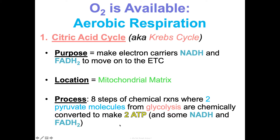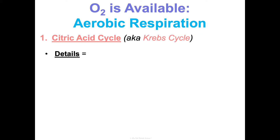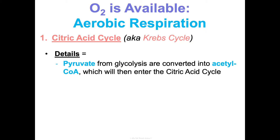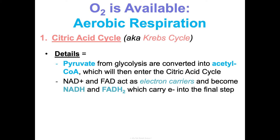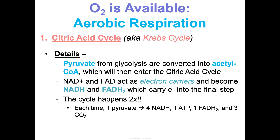You don't need to worry about the exact count of those electron carriers. CO2 is produced as a product. The pyruvates from glycolysis get converted into acetyl-CoA, and that is what enters this cycle. NAD+ and FAD act as electron carriers, and they become NADH and FADH2 when they pick up those electrons and hydrogens and carry them into the final step. This cycle happens two times — just like the Calvin cycle happens twice in photosynthesis. Each time it takes one pyruvate and makes four NADH, one ATP, one FADH2, and three CO2.